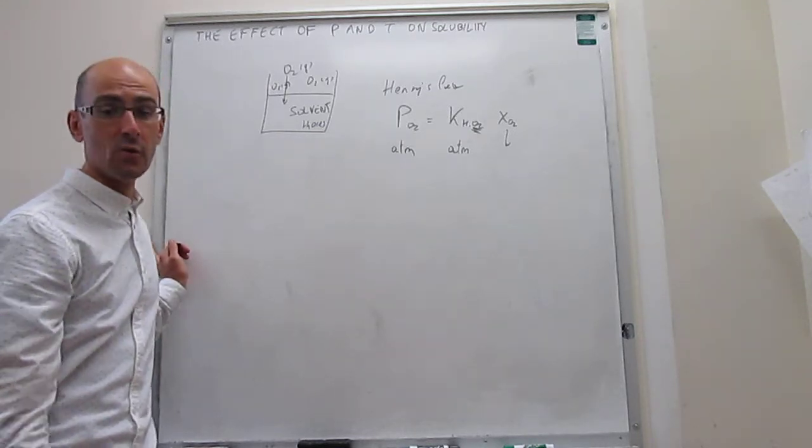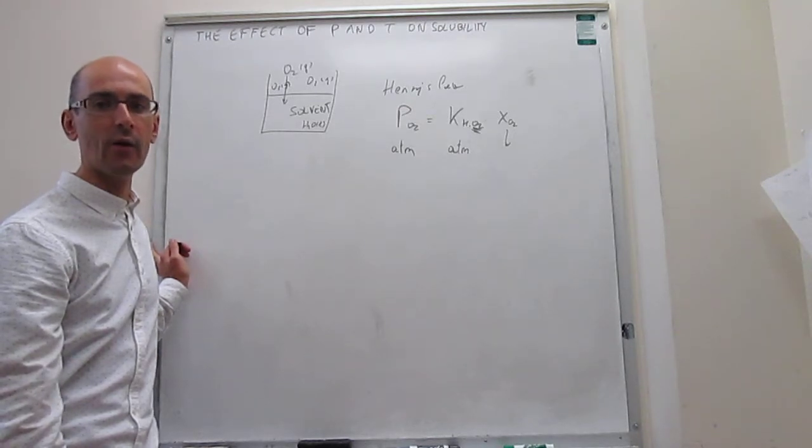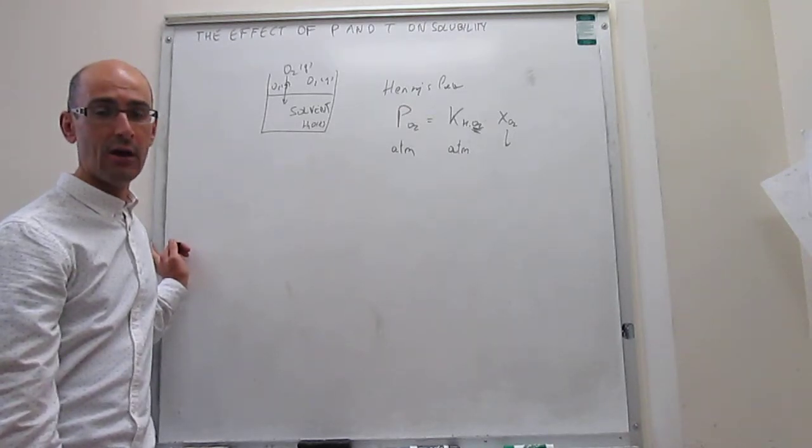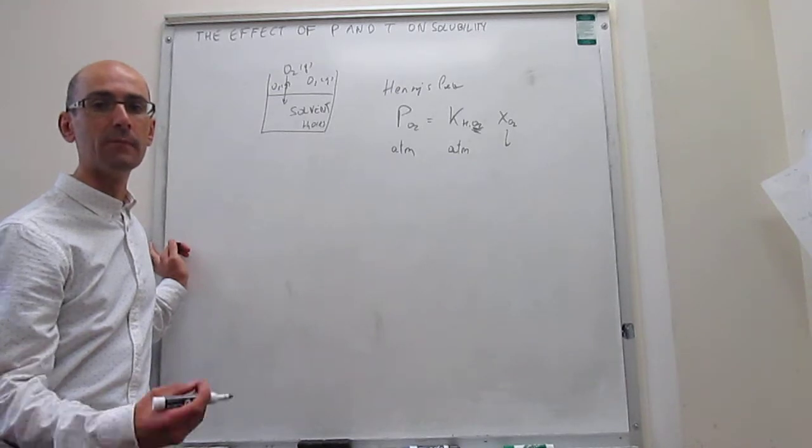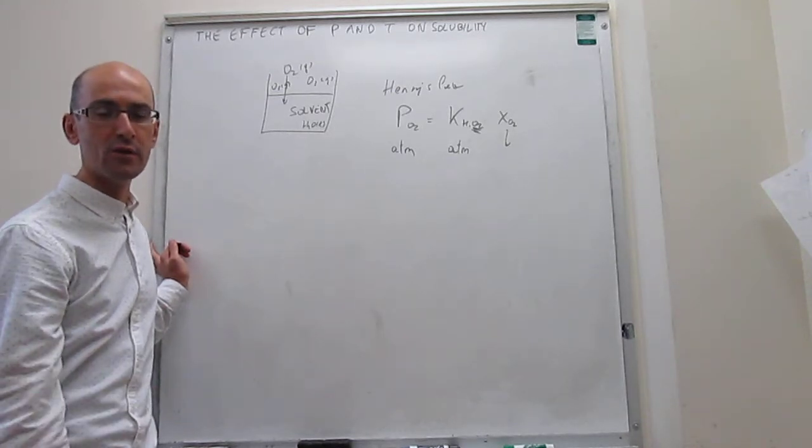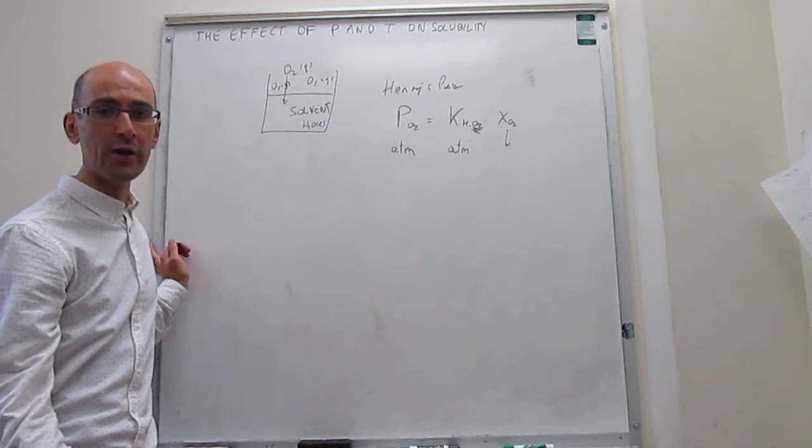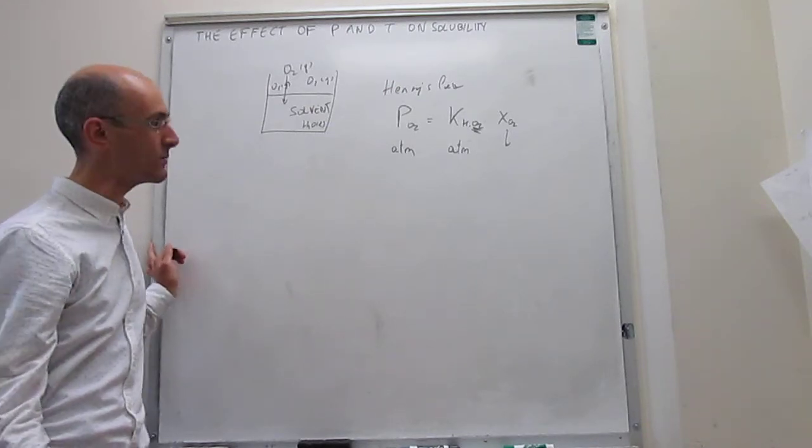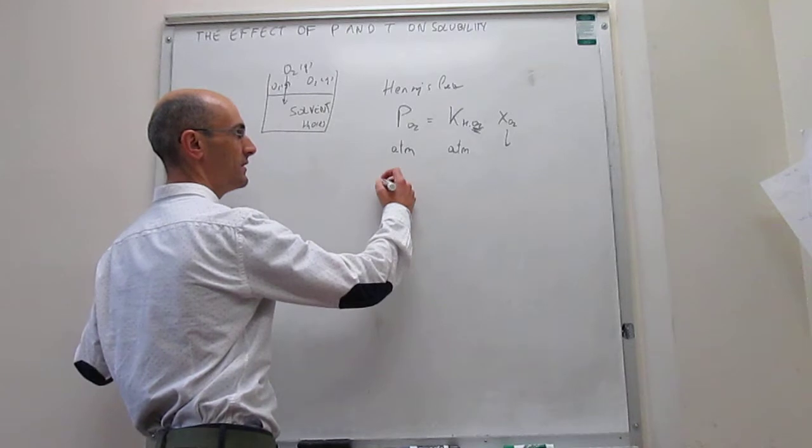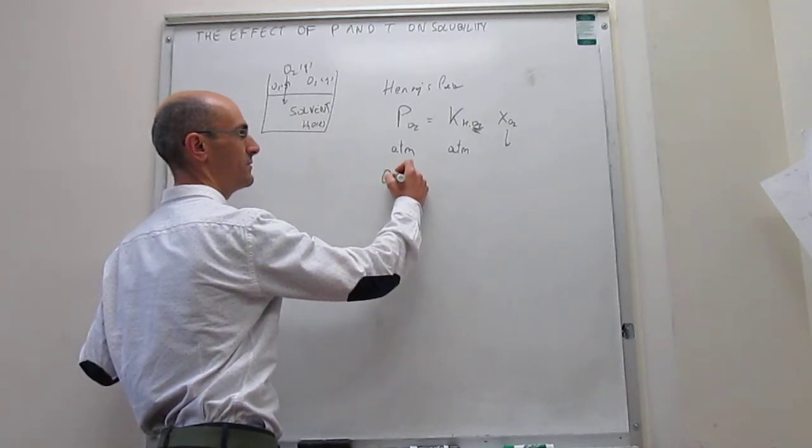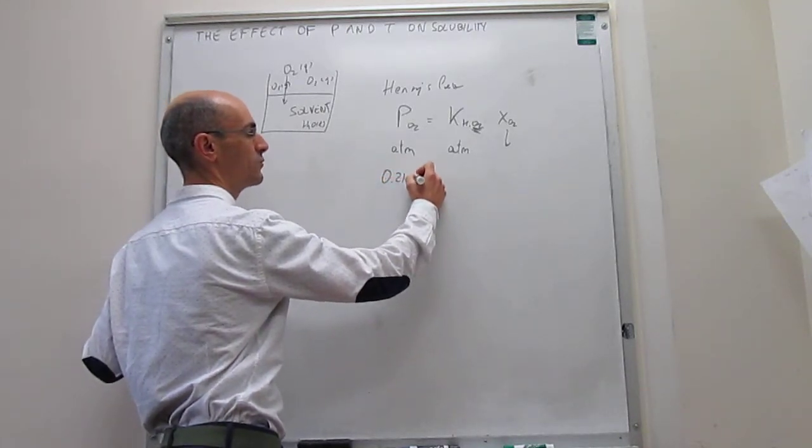For now, we're going to do a numerical example to see how Henry's law is applied. Our calculation is going to be the calculation of the mole fraction of oxygen in water under Earth's atmosphere. In Earth's atmosphere, it turns out that the pressure of oxygen is 0.21 atm.